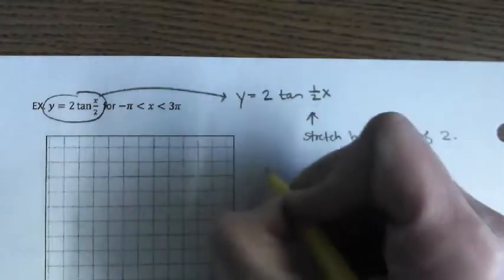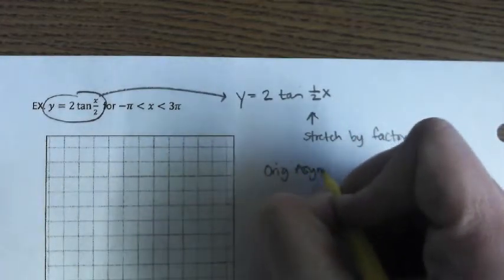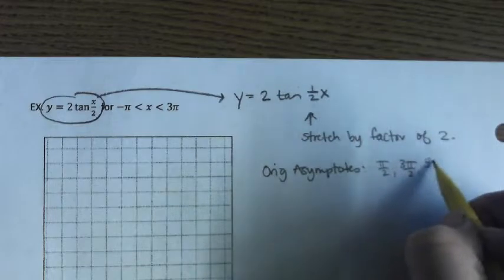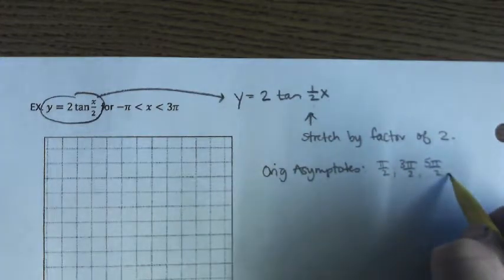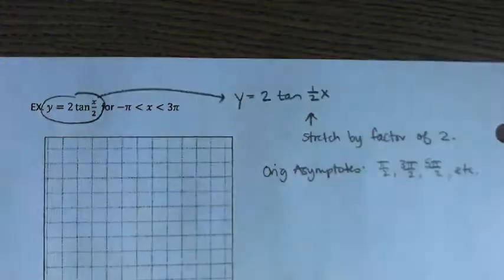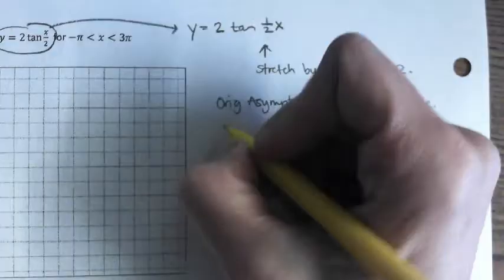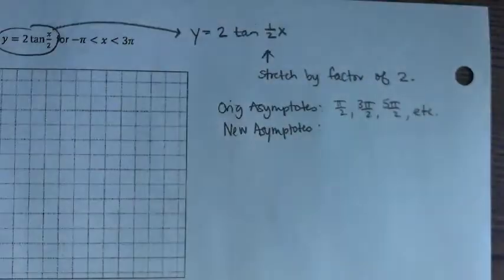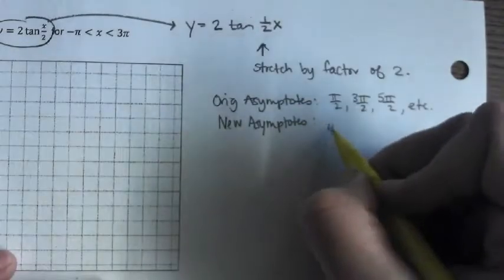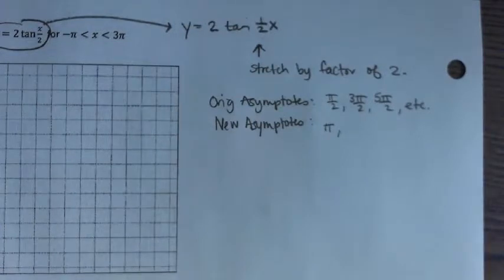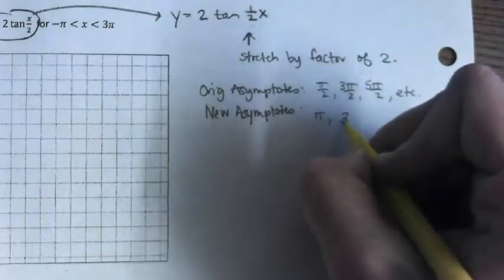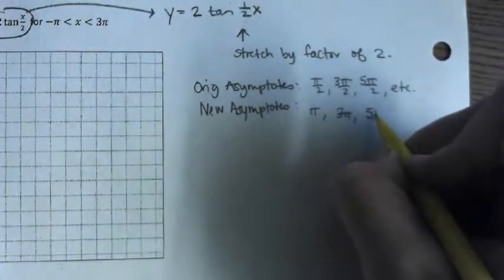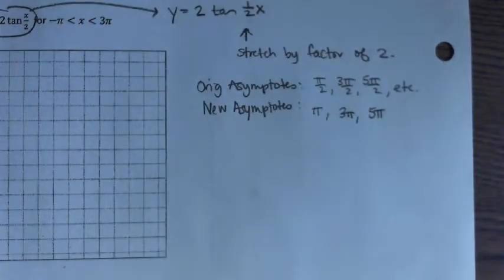It stretches it by a factor of two. So if your original asymptotes are at pi over two, three pi over two, five pi over two, et cetera, then your new asymptotes are where if you're stretching by a factor of two. Pi, six pi over two which would be three pi, good, ten pi over two which would be five pi, and do you see the pattern, every other pi.